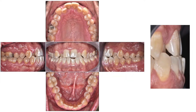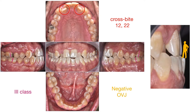When performing the intraoral inspection, we find a dental third class, a crossbite of 12 and 22, which is often associated with an elongated mandible, and negative overjet. The case is completed by a tendency for open bite, noted even by the patient, who initially wanted to decrease his chin's height.